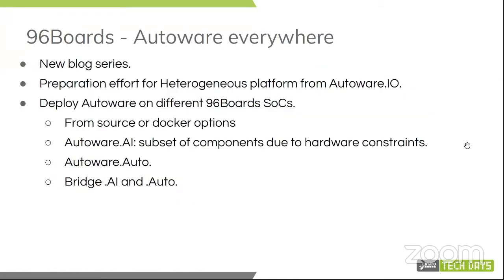Afterwards, the next piece of work started as a new blog series called Autoware Everywhere, which was the main effort to prepare for different SoCs as part of Autoware.io. What we tried to do is deploy Autoware or sub-components of Autoware into different 96 Boards. We have a couple of options — either from source or Docker, depending on the board — and we cover both in the blog post. Within Autoware.ai, we took a subset of components due to hardware constraints; with multiple boards, you could run all of Autoware apart from the neural networks. For Autoware.auto, the state at the time of the blog post was quite new, so there was only a little available — if you go now and try to replicate it, you will have a lot more functionality.